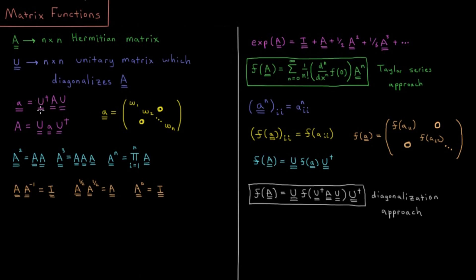We have U dagger AU — the unitary transformation which diagonalizes A — and then we can back-transform that back to the representation of A. We can do the back transformation U A U dagger to get from the diagonal back to the standard representation.